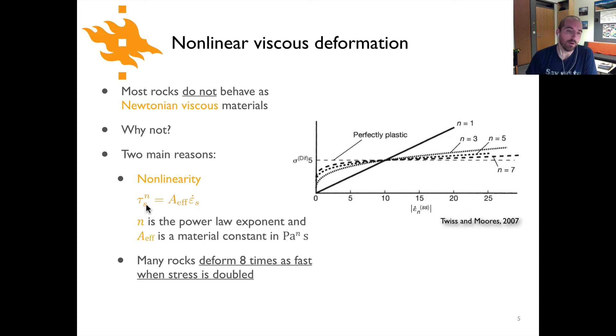So what this means is that we have rock where you have a shear stress in the rock to some power n and that power n gives you this power law behavior that we commonly observe in rock deformation. That is then equal to something where we would have had viscosity before, that's viscosity η has been replaced by an Aeff, which is a material constant, and then that's multiplied by the strain rate. Now this Aeff is actually very much like viscosity, except it has units of pascals to the n seconds rather than pascal seconds.